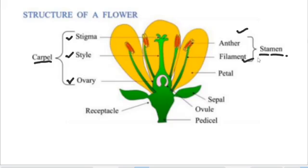Apart from identifying the parts of the flower, you must also be able to explain their functions. The stigma is a sticky part that is able to trap the pollen grains. The style joins the stigma to the ovary. In the ovary, the ovules are formed — these are the female sex cells.